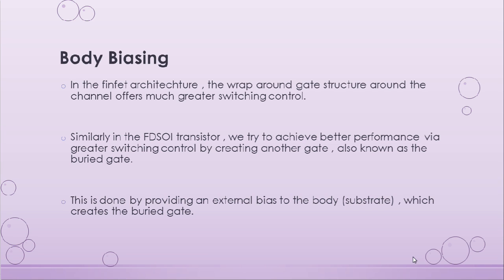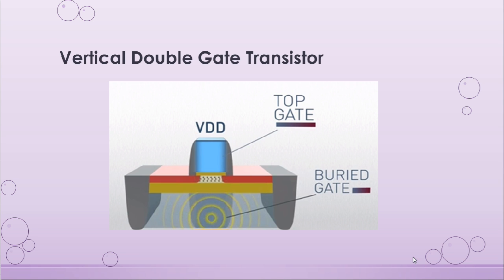Let us look at how body biasing affects an FDSOI device. In the case of FinFETs, the wraparound gate structure around the channel offers much greater switching control. Similarly, in the FDSOI device we can achieve much greater switching control by simply creating another gate — done by providing an external bias to the body, which creates a buried gate on the other side of the buried oxide layer. As we can see in the picture, the application of a bias to the substrate results in the creation of a buried gate exactly opposite to the top gate. Hence, the transistor now behaves as a vertical double gate transistor.